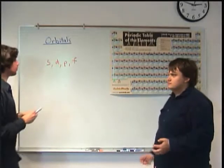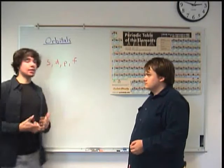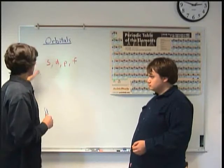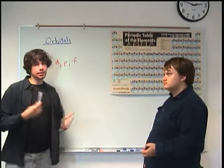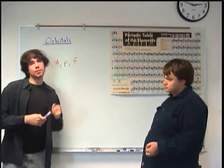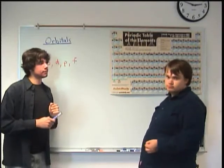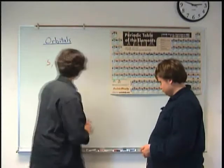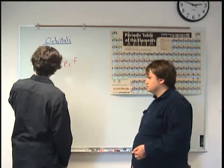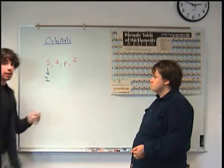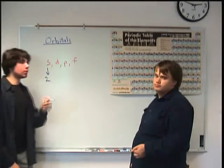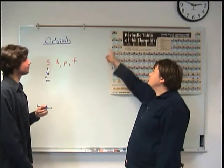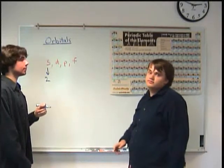Now, basically, each block has their own unique design for an electron cloud or an orbital. And based on that, they're different sizes, so therefore they can hold different numbers of electrons in them. So the S block can hold a total of two electrons. So basically, if you have an S orbital, you can only have two electrons inside of it.